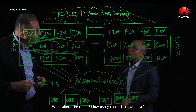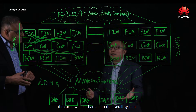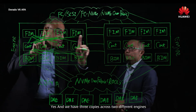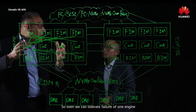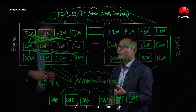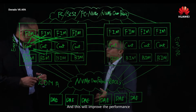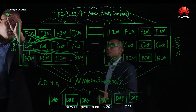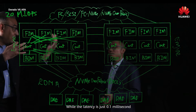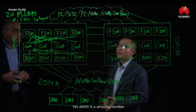What about the cache — how many copies do we have? We have a global cache, shared across the overall system, with three copies across two different engines, so we can tolerate the failure of one engine. When you have this shared cache, two things are achieved: best performance, because the cache is shared across all controllers; and the performance is 20 million IOPS with a latency of just 0.1 milliseconds — amazing numbers.